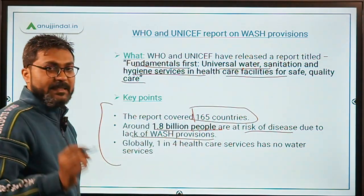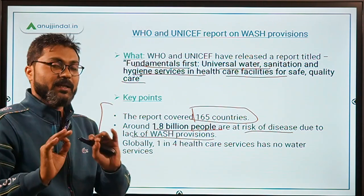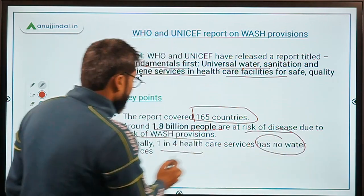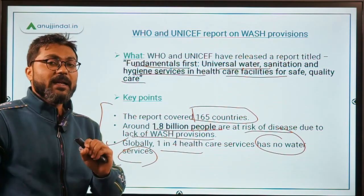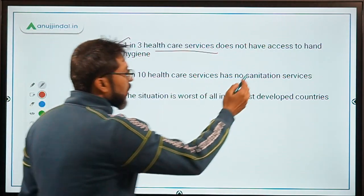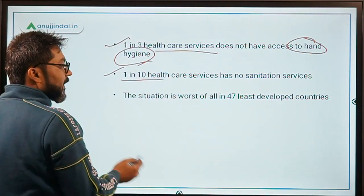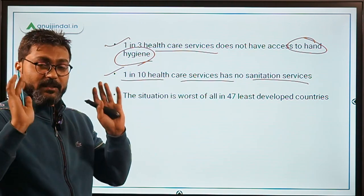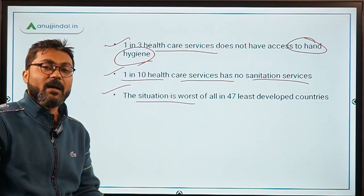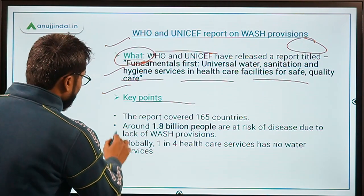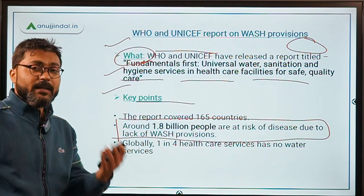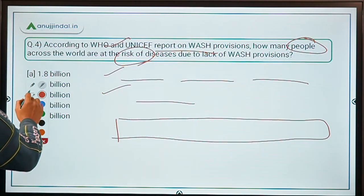This report covered 165 countries across the world. According to the report, globally 1 in 4 healthcare facilities has no water services. 1 in 3 healthcare facilities does not have access to hand hygiene. 1 in 10 healthcare facilities has no sanitation service of any kind. The situation is worst in the 47 least developed countries. The most important figure to remember from this report is that 1.8 billion people are under risk due to lack of WASH provisions.